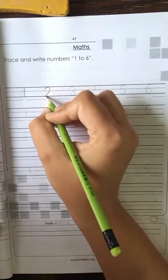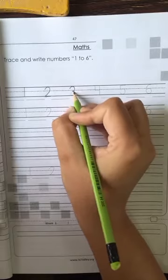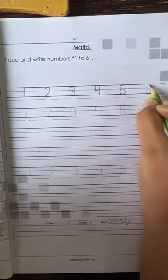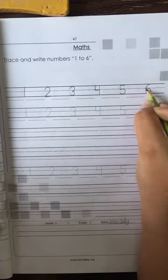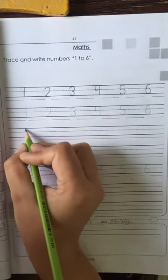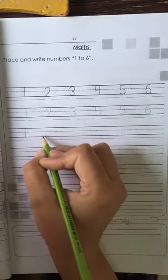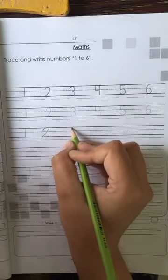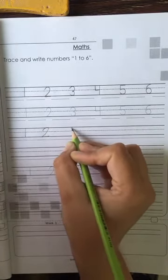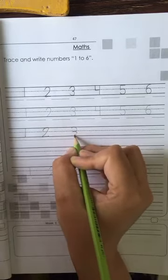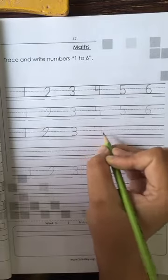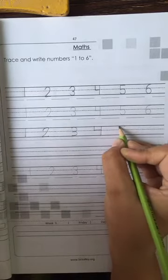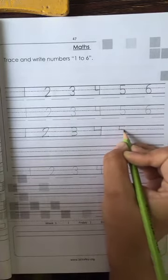One, two, three, four, five, six. One, two, three, four, five, six. One, two, three, three, three, four, five dots, four straight line and curve, five, six, six.